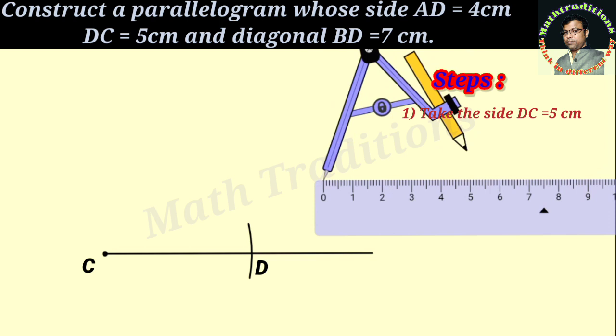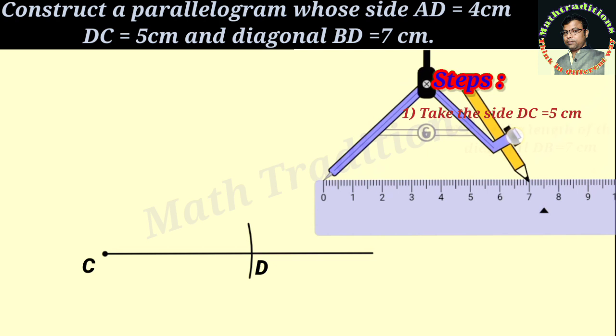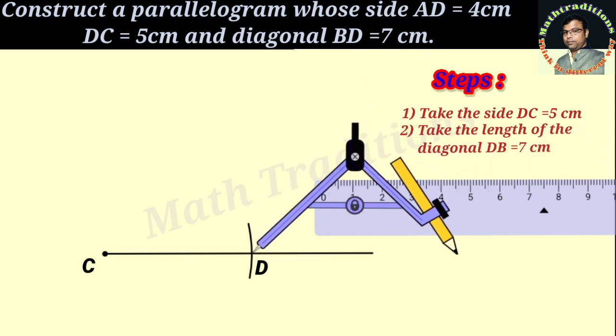Next, we will take the length BD as 7 cm from D towards C.